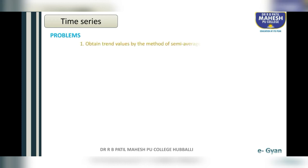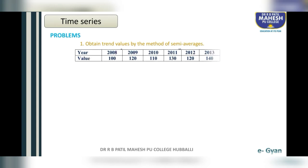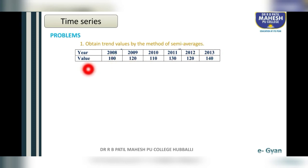Let us solve an example on semi-averages. Obtain trend values by the method of semi-averages. The year is given from 2008 to 2013, and the values are 100, 120, 110, 130, 120, and 140.